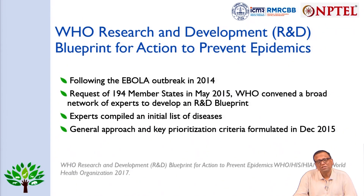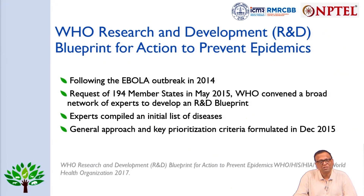The WHO Research and Development Blueprint for action to prevent epidemics was developed following the Ebola outbreak in 2014. It was made on the request of 194 member states in May 2015. WHO convened a broad network of experts to develop the blueprint; they compiled an initial list of diseases and the general approach and key prioritization criteria, formulated by December 2015.